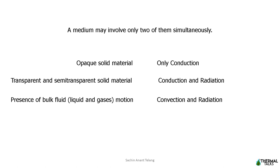In general, we can say that presence of bulk fluid motion is necessary for convection, as well as some fluid particles absorb radiation. In vacuum there is only radiation. So by these different materials we can say that at any given medium there are only two modes of heat transfer happening simultaneously.